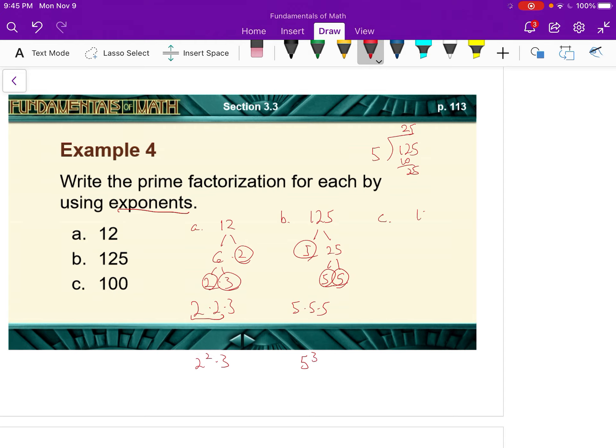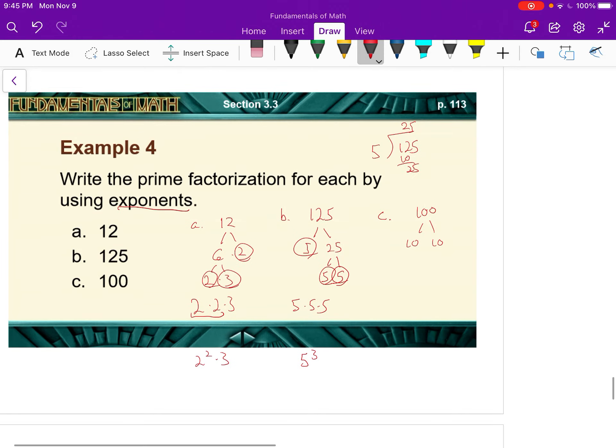C, 100. Well, we know that's 10 times 10. We could have done 20 times 5 or 50 times 2. But 10 times 10. And each of these 10s is 2 times 5. So 2 times 2 times 5 times 5. Or in exponent form, 2 squared times 5 squared. And that is how you find the prime factorization.